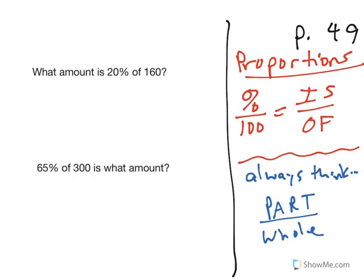Unit 7, working with percentages. We're going to talk about percentages two different ways, and the first way is proportions. So if you look off to the right here, proportions, the easiest way to think about it is percent over 100 equals is over of.